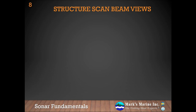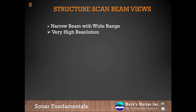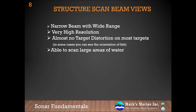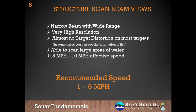To refresh what structure scan beam views are: they're very narrow with wide range, and very high resolution because of their higher frequency. There's almost no target distortion on most targets, and in some cool cases you almost get a picture of the fish. You're able to scan large areas of water relatively quickly, which is particularly useful when pre-fishing for a tournament. The effective speed is between half a mile an hour and 10 miles an hour, and my recommended speed for structure scan is between one and six miles per hour to ensure optimal targets.